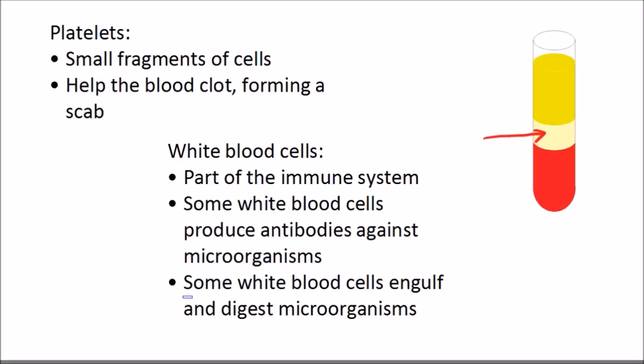And lastly, we have white blood cells. So white blood cells are part of the immune system and there are many different types of white blood cells. But the two that we're interested in right now are, one, the type that produces antibodies against microorganisms, and secondly, the other type of white blood cells that engulf and digest microorganisms. And we don't have many white blood cells. They would all fit into this section of our blood along with the platelets.